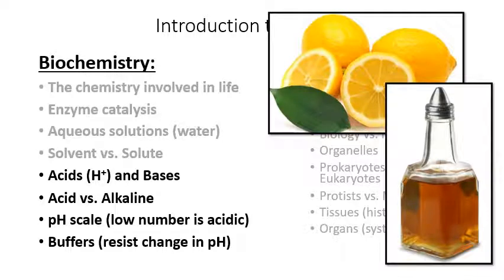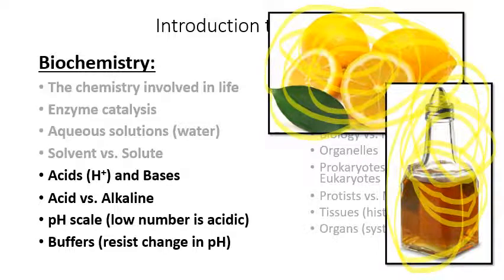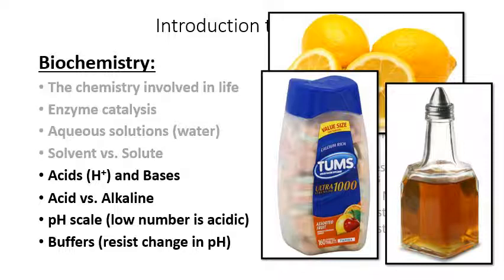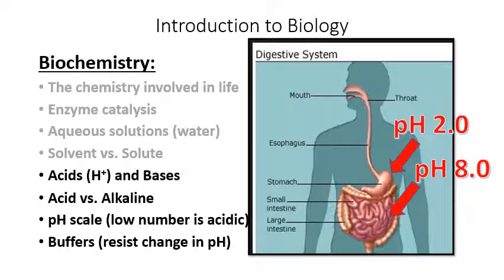These are two acids you might recognize: vinegar — acetic acid — which you put on your salad, is a weak acid; and lemon juice is citric acid, which you find in other citrus fruits. An example of a base is Tums, which you take for an upset stomach — these pills have a very high pH. The stomach has a pH of about 2 because it contains hydrochloric acid. The intestine has a pH of around 7.5 to 8 because it contains bicarbonate, which is a base. I often ask on quizzes: what is the pH of the stomach versus the intestine?